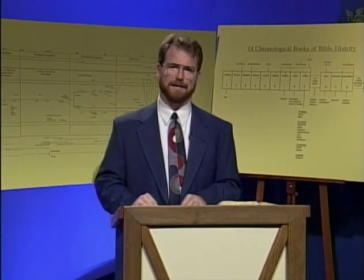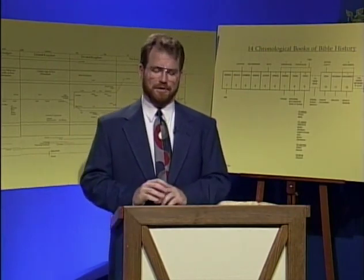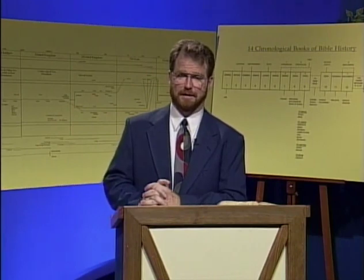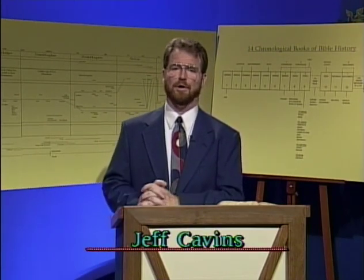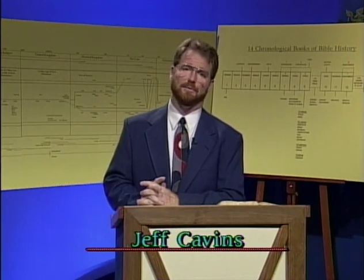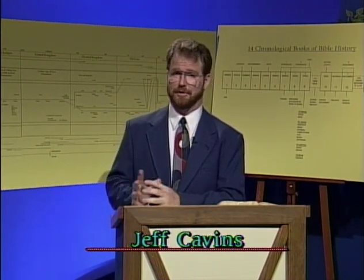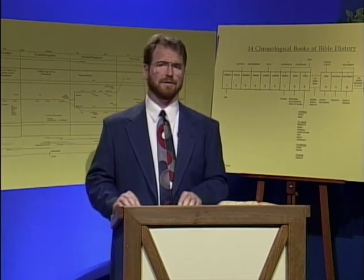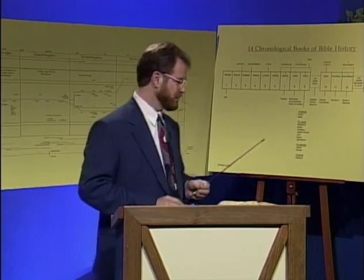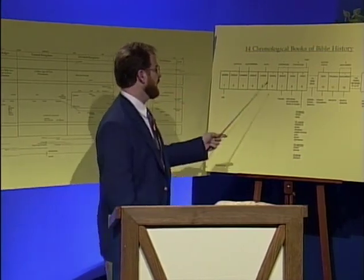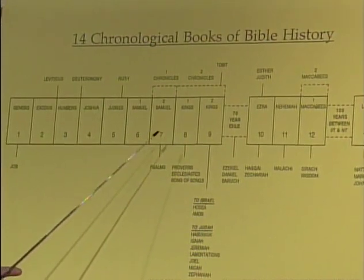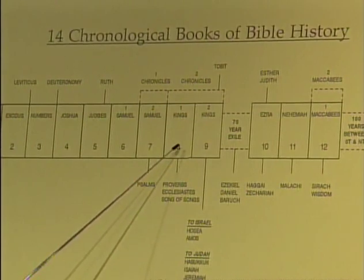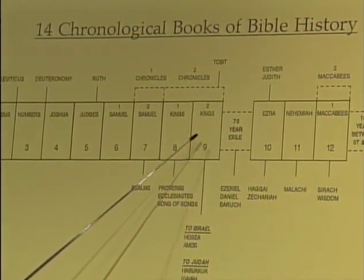Welcome back to Our Father's Plan. We're about to enter into a very interesting period in Israel's history called the divided kingdom, the seventh of our 12 periods of salvation history. We'll also look at the exile, period number eight. This comes on the heels of the United Kingdom period. Looking at our chart, we have these 14 historical books; we're going to look at 1 Kings — the eighth of the 14 historical books — and also 2 Kings today.